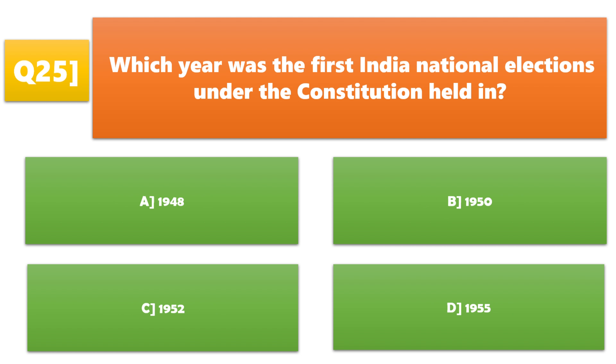In which year were the first Indian National Elections under the Constitution held? A. 1948, B. 1950, C. 1952, D. 1955. C. 1952 is the correct answer.